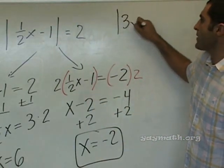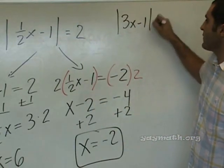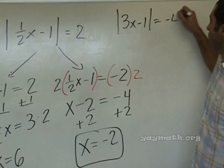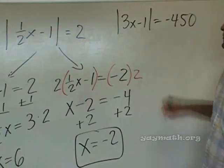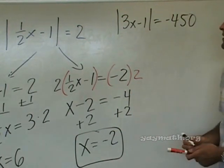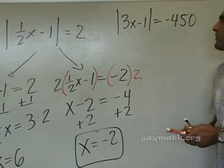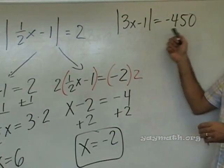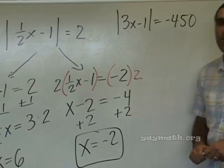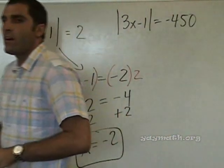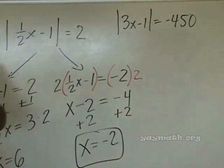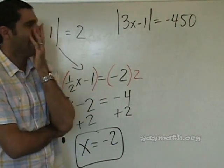Last one of the day: absolute value of 3x minus 1 equals negative 450. Red flag — no solution, because an absolute value cannot equal a negative number.